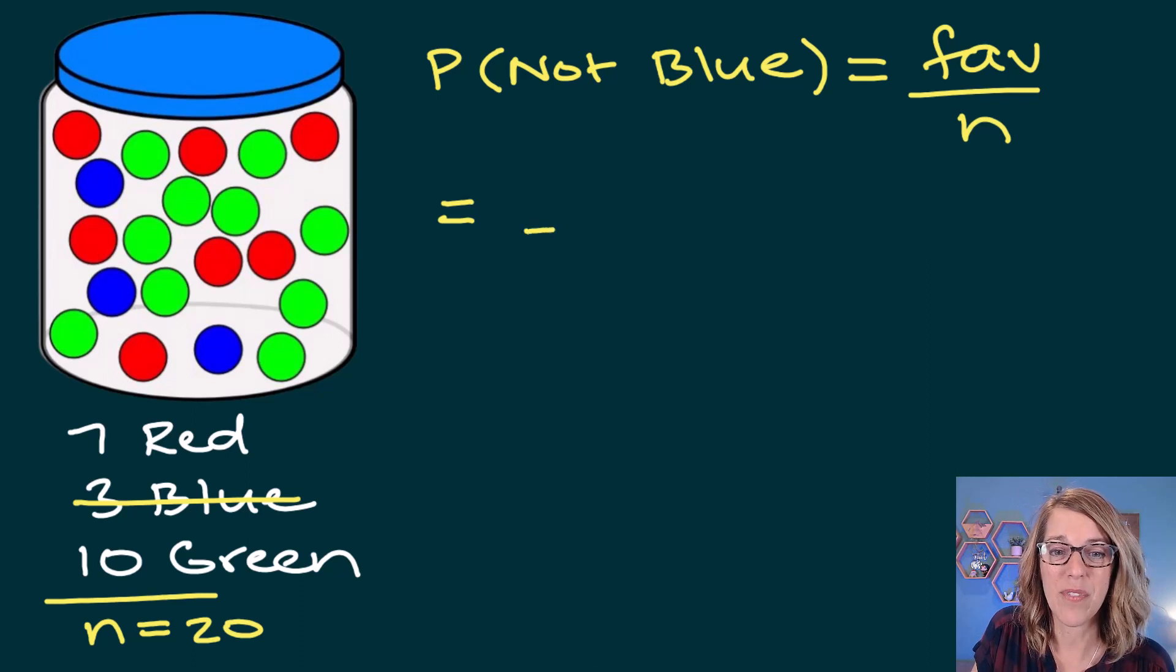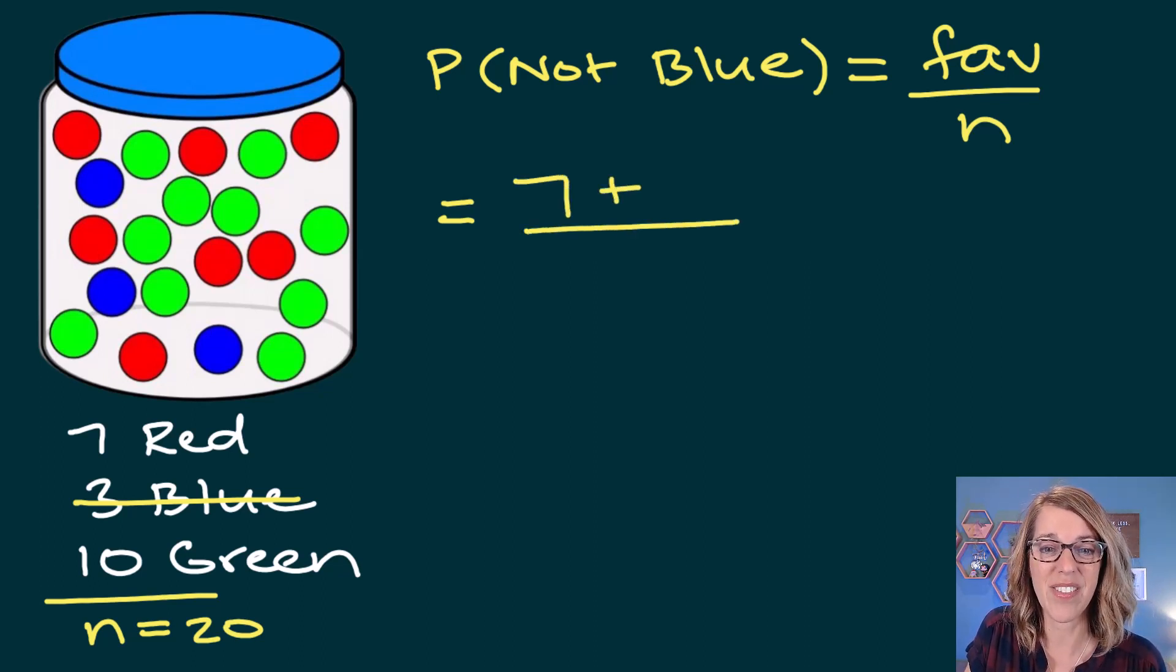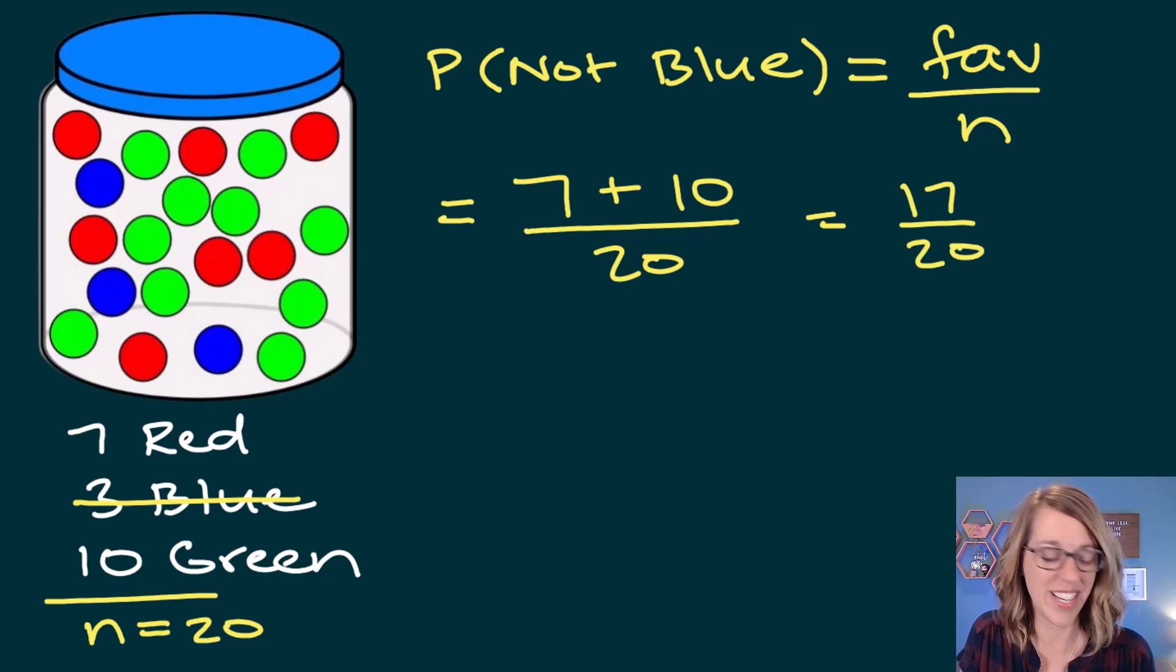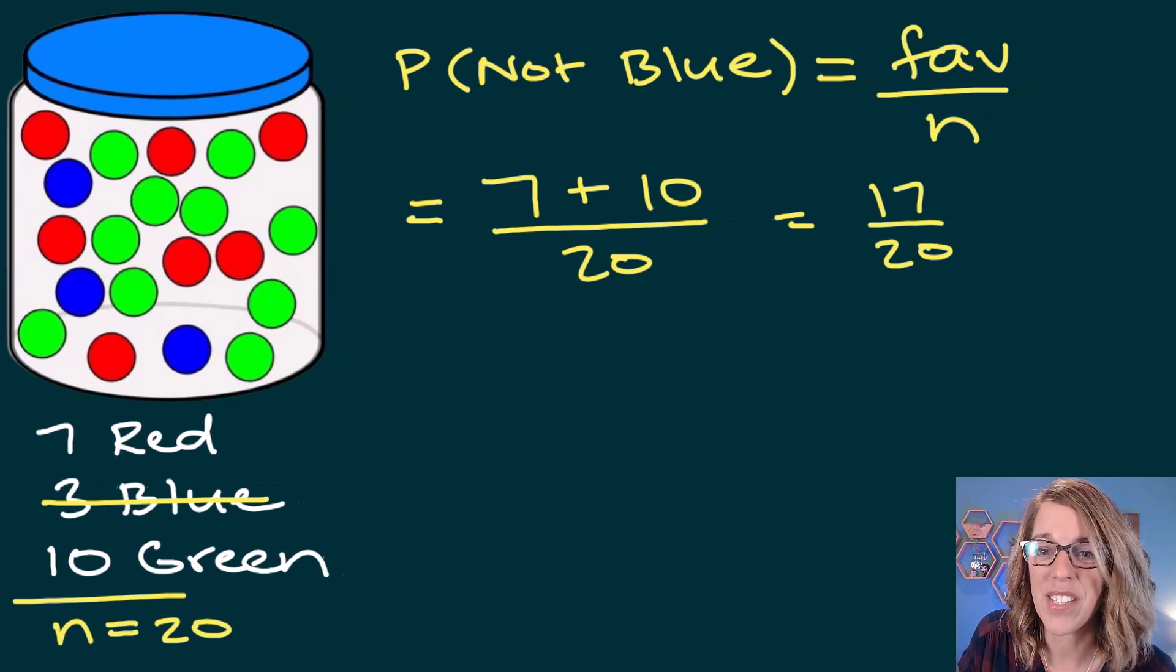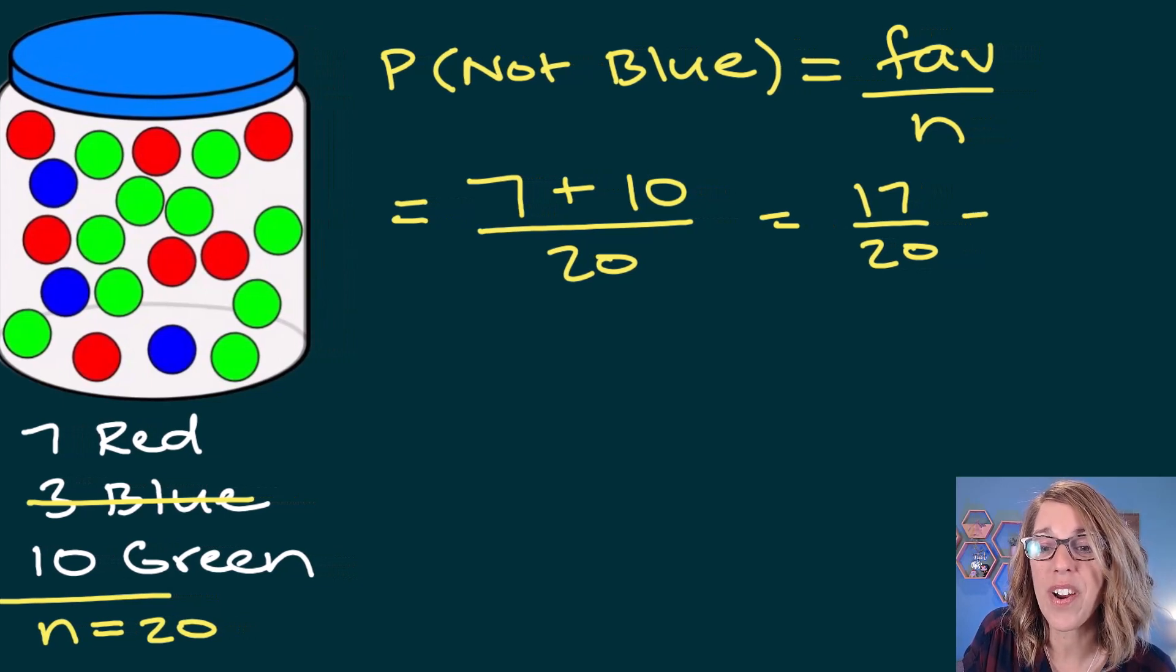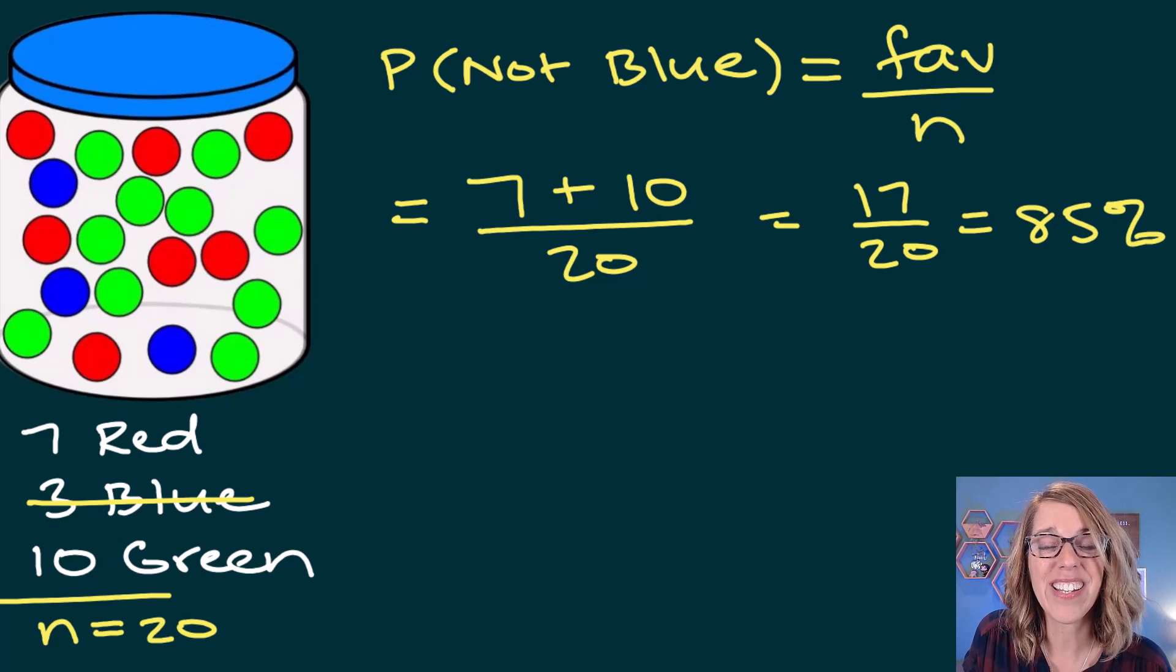For our favorable, that would be the seven reds or the 10 greens, which I'm going to add together. That gives me 7 plus 10 over 20, so we end up with 17 out of 20. 17 out of 20 gives us 0.85 or 85%.